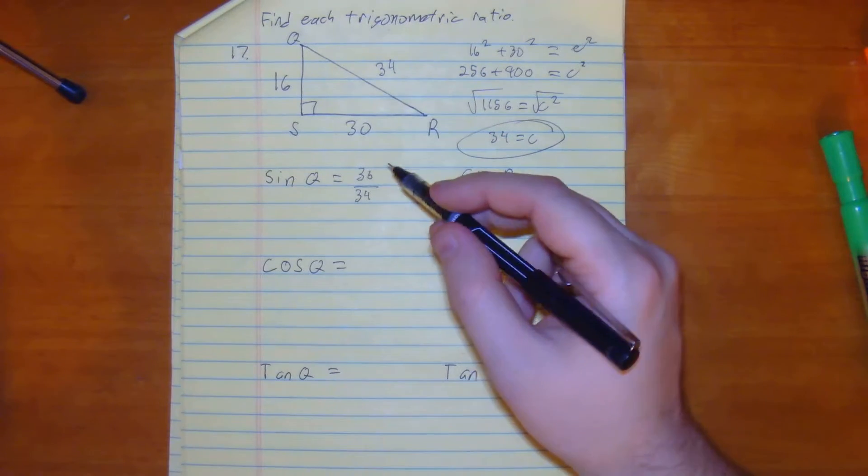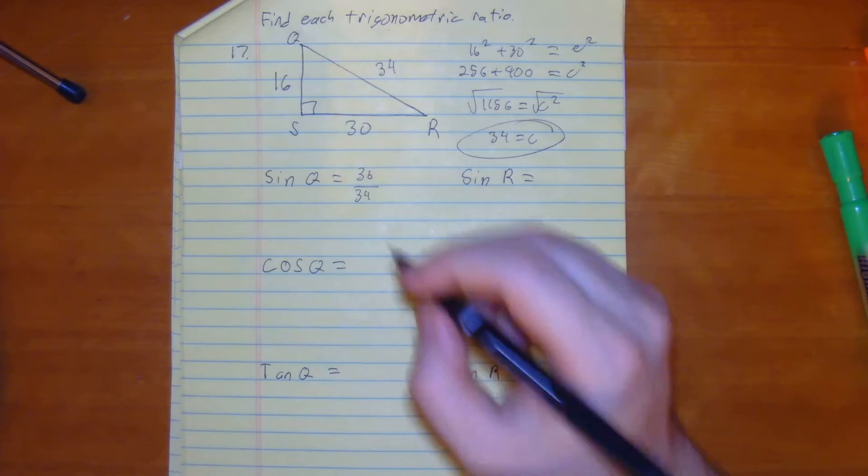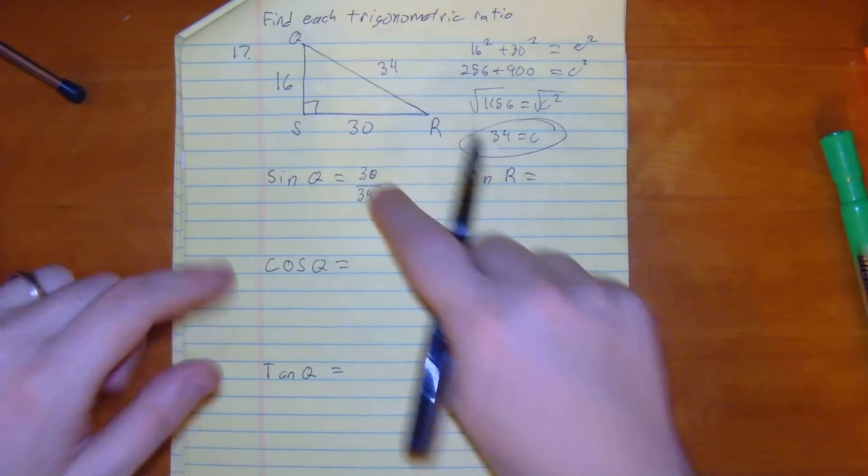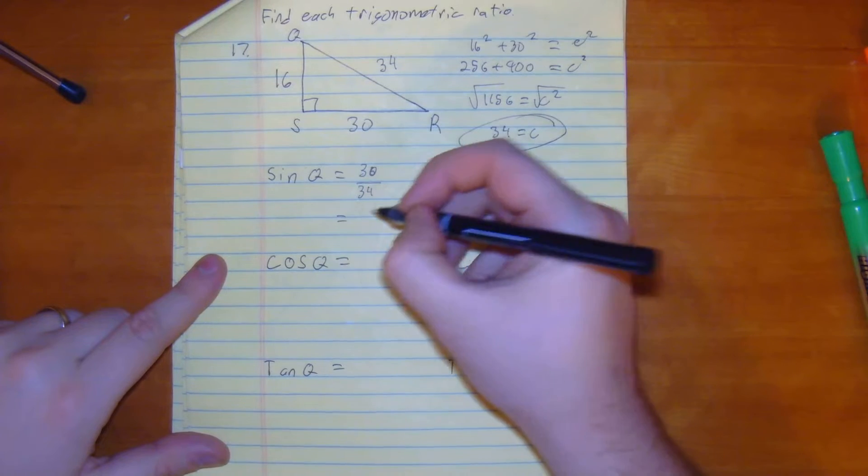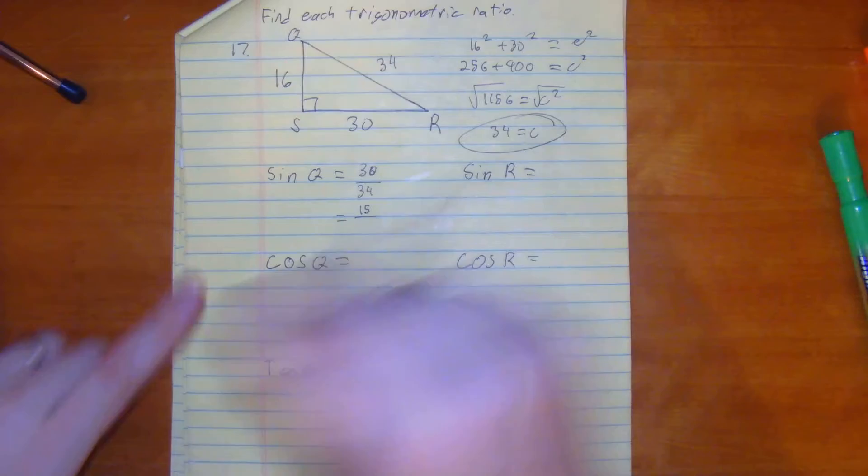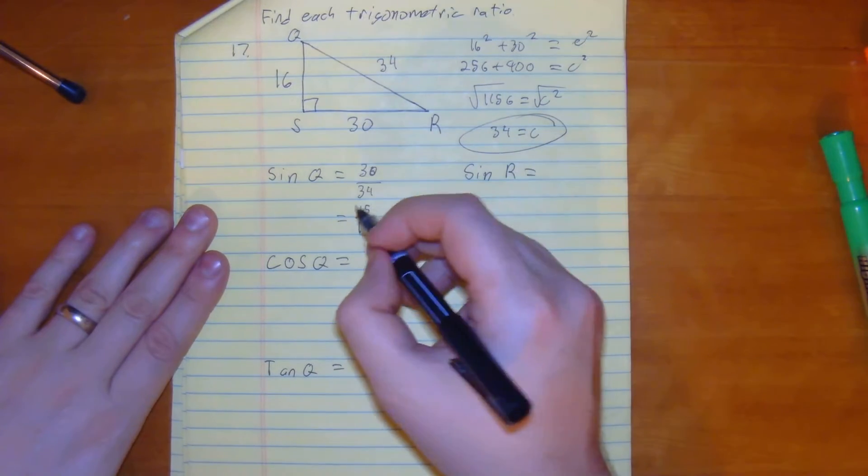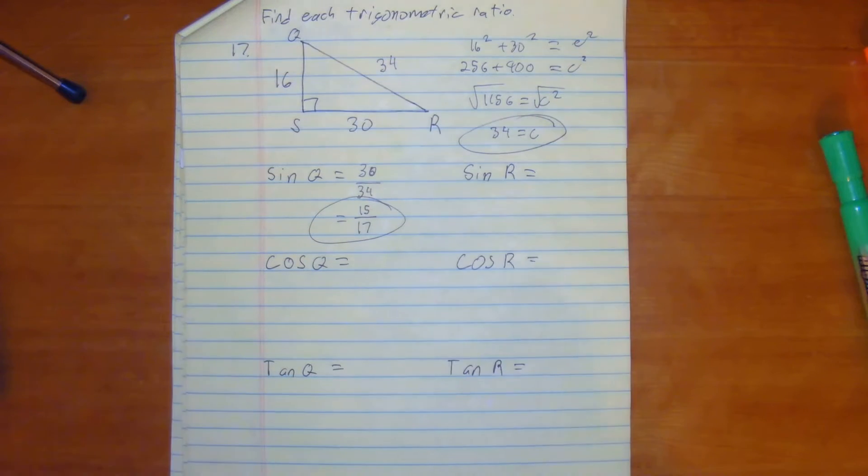Right here, I notice that they both share, you can simplify it. They're both even, so I can simplify it to 15 over 17. So our sine of q would be 15 over 17.